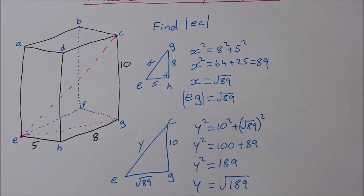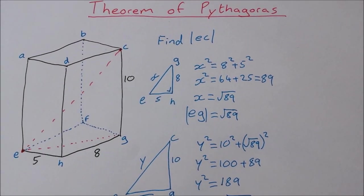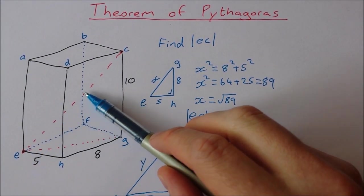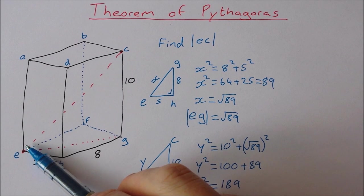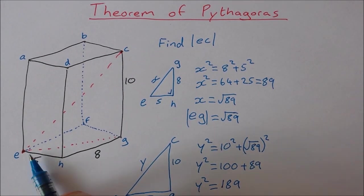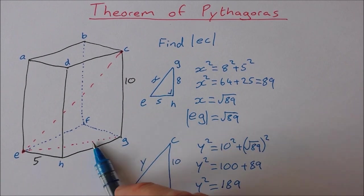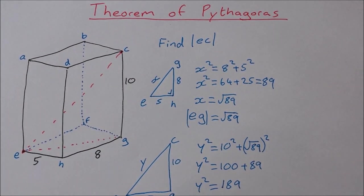So you can see what we did in this question. We wanted to know this length here, the internal diagonal. In order to get that we had to find the diagonal on the bottom face first and then use that to find the internal diagonal.